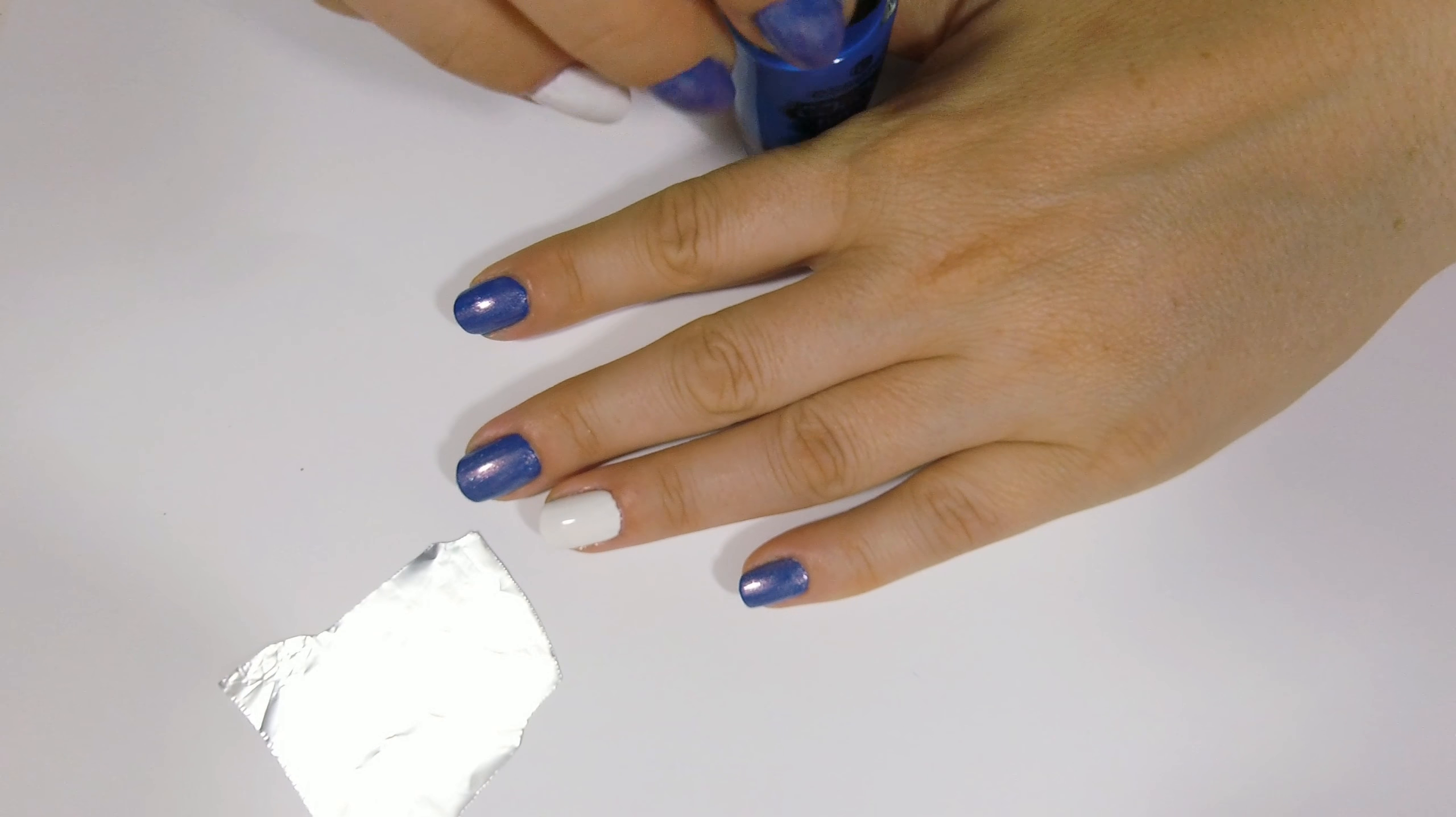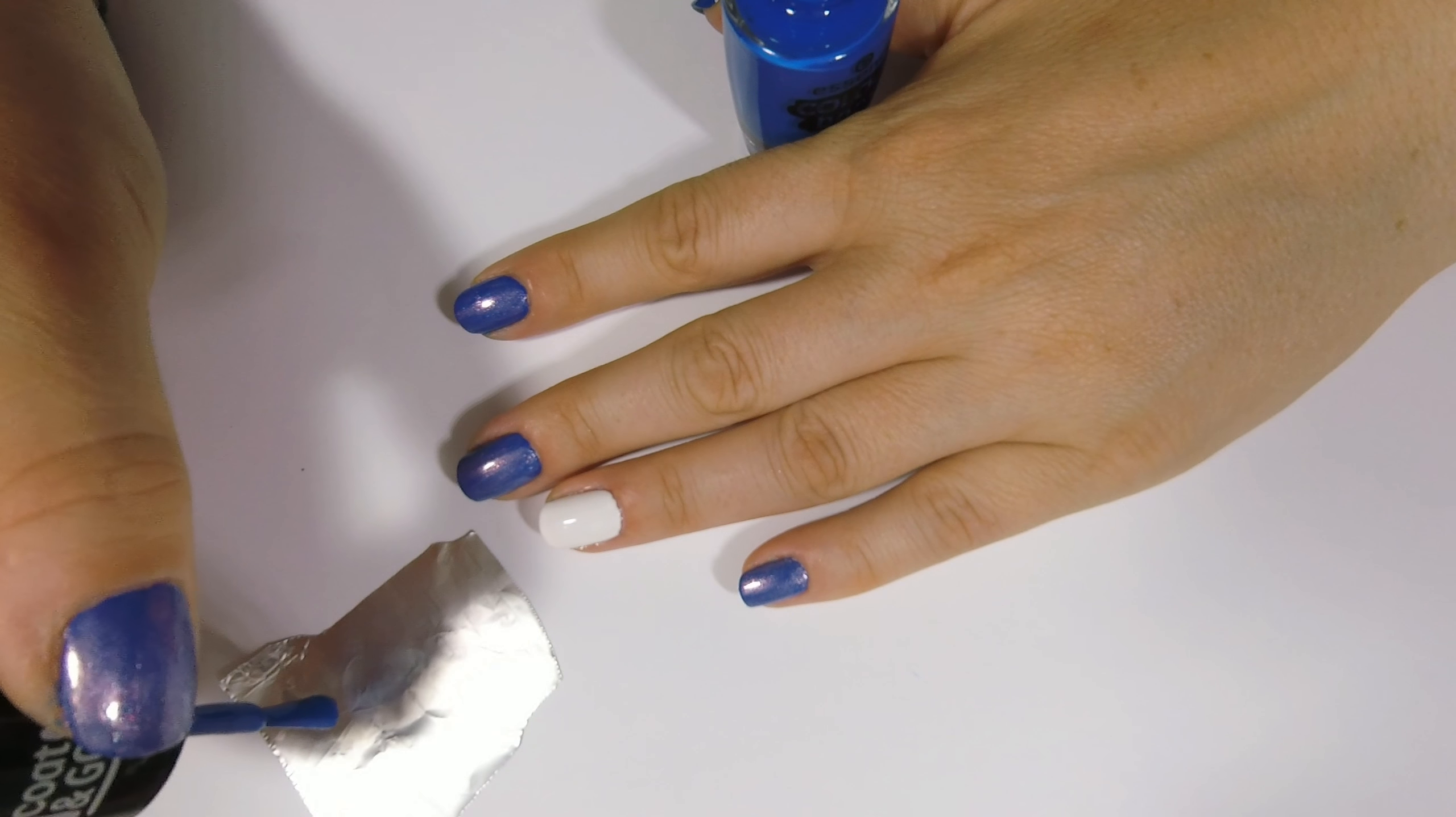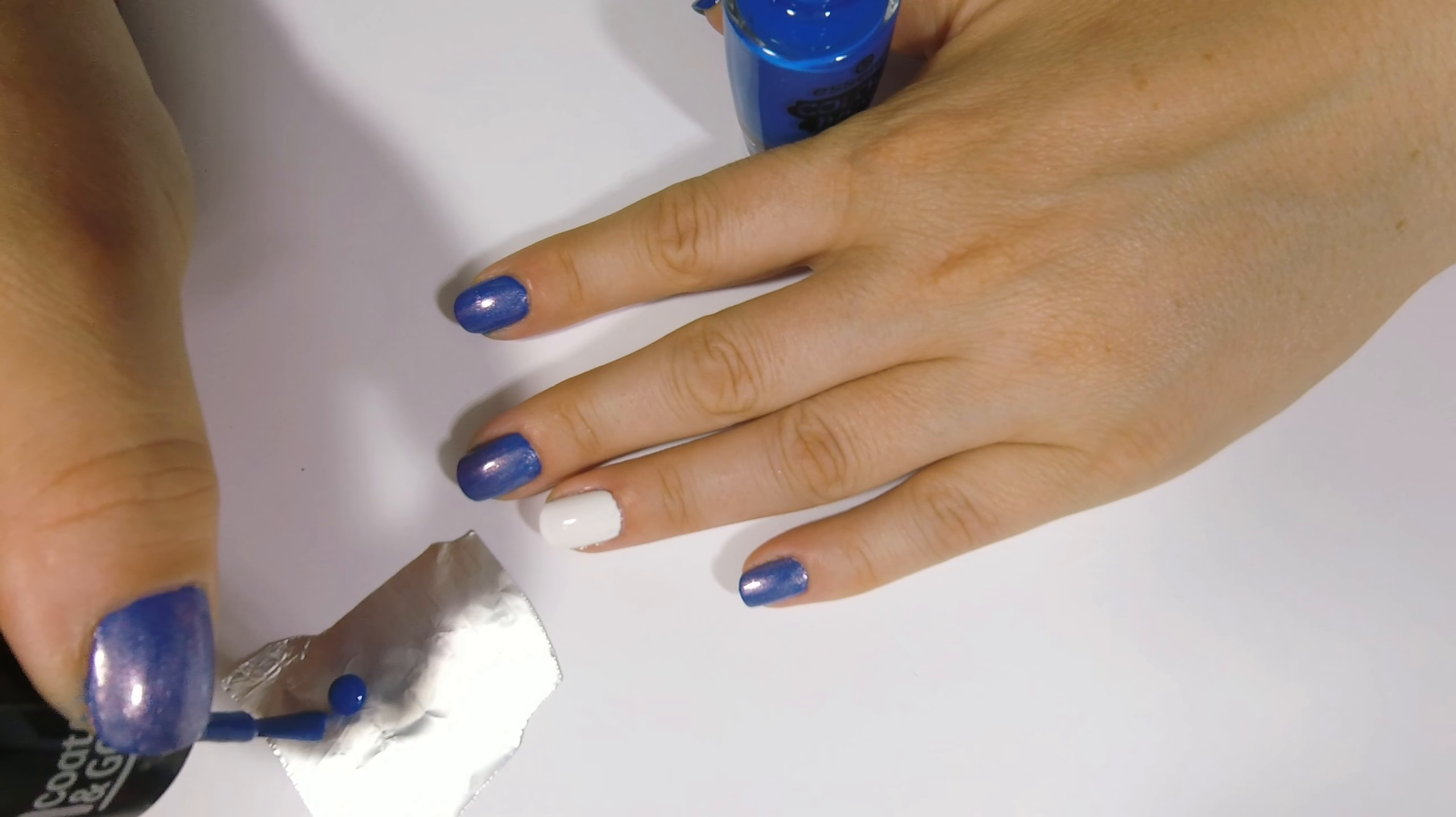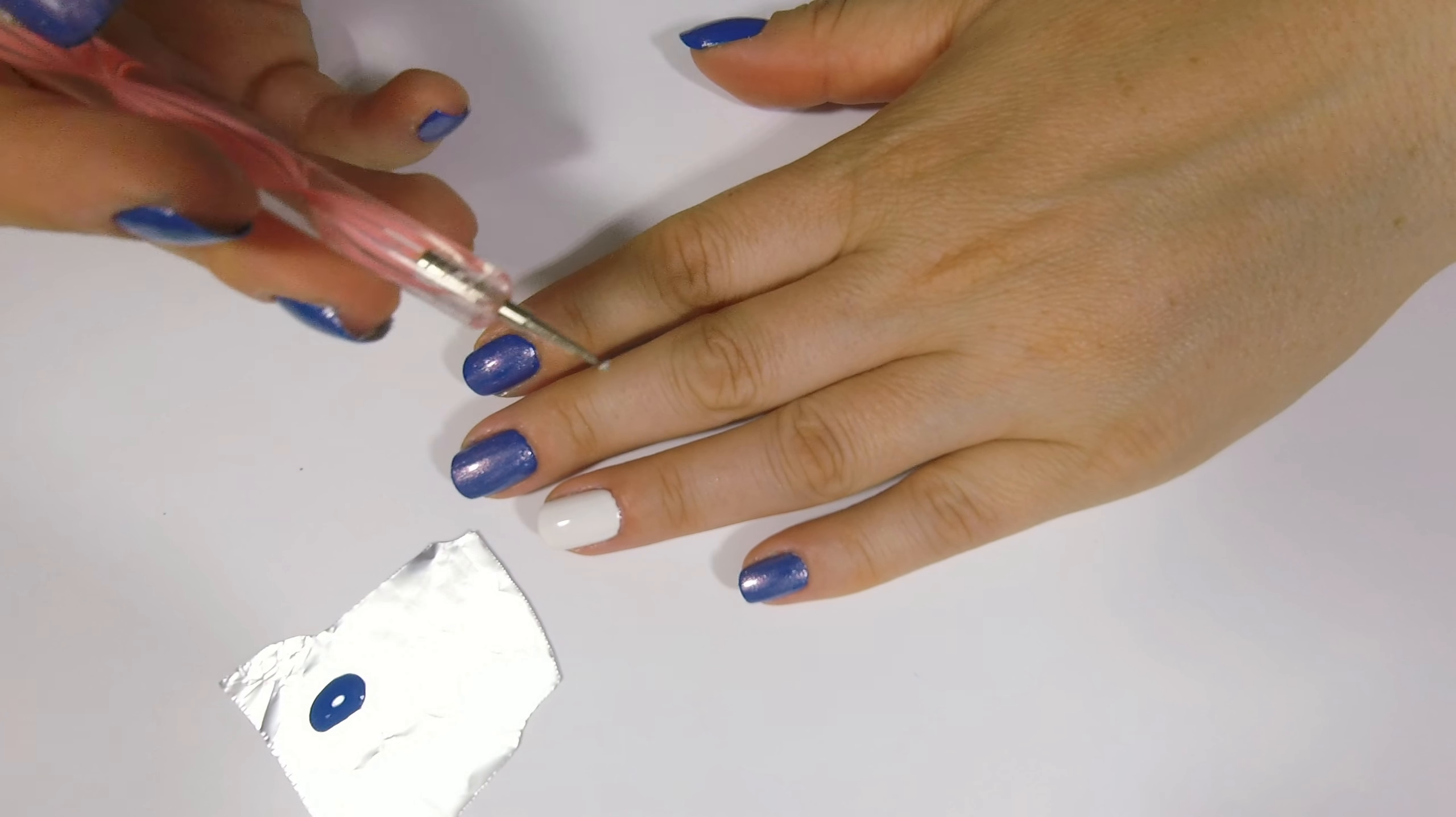Come decoro sull'anulare riprendo il numero 11 di Essence e metto un po' di colore su un pezzetto di carta stagnola. Poi con un dotter realizzo due semplici punti su un lato dell'unghia.